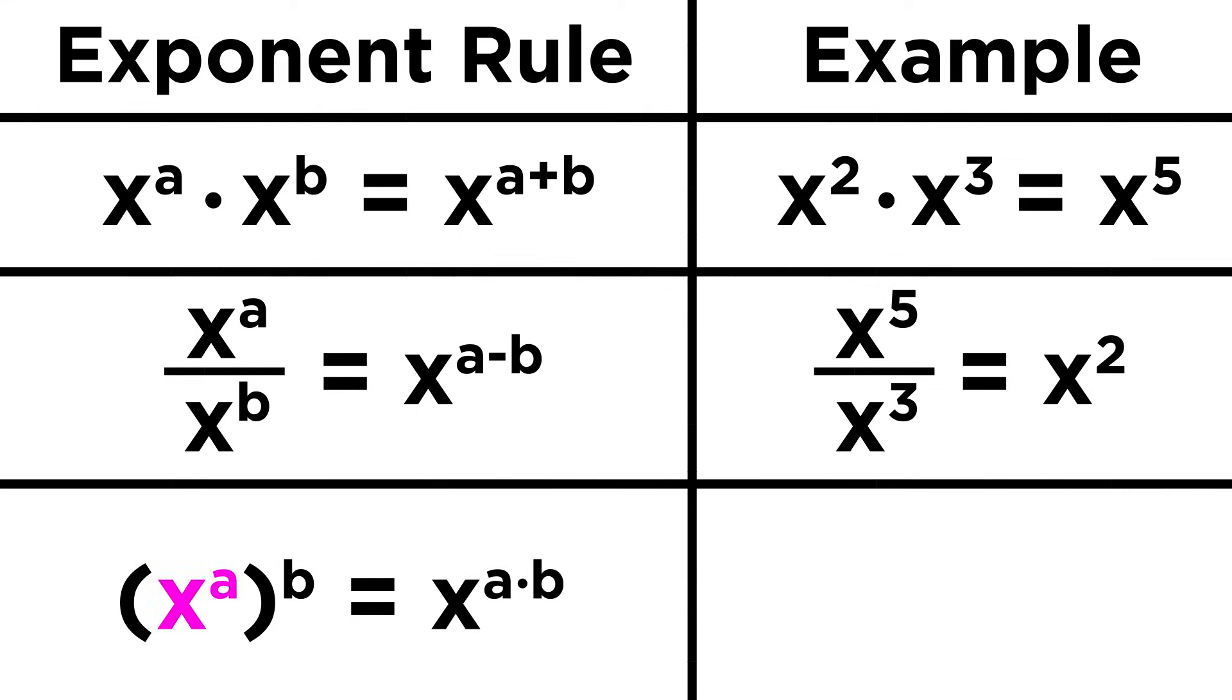Lastly, if we do x to the a power, which is then raised to the b power, we get x to the a times b. Let's say we have x to the fourth to the second, that means we have four x's, and then that whole thing is squared, meaning two sets of four x's. That's eight x's total, or x to the eighth, which is four times two. So these expressions summarize the rules for manipulating terms that are raised to exponents.